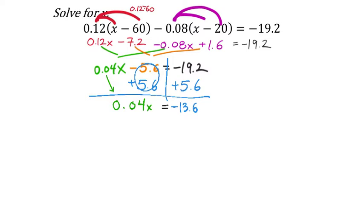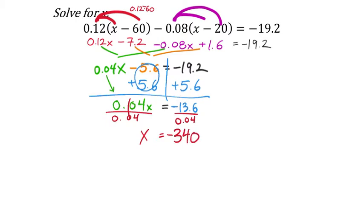Last thing: take negative 13.6 and divide by the coefficient on both sides — that's 0.04. Making it a phantom 1x. x equals — let's check the calculator — negative 340. After checking on the calculator, it looks like we did this correct. Negative 340 appears to be the final answer.